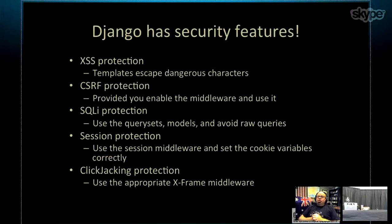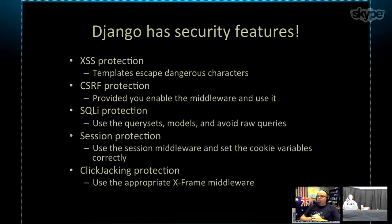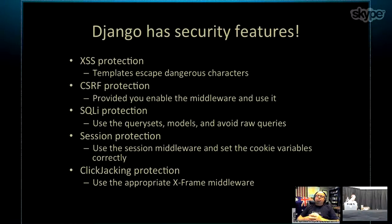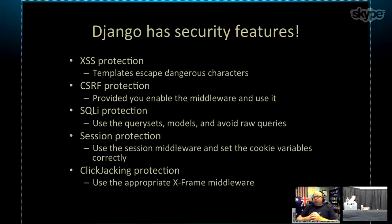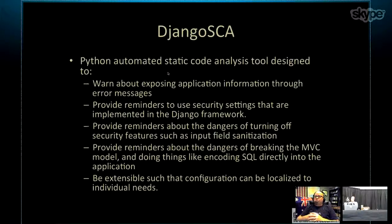Since this is about a Django static source code analysis project, we need to talk about Django's built-in security features. Cross-site scripting protection is provided by templates that escape dangerous characters. Cross-site request forgery protection is provided by enabling middleware. SQL injection protection comes from using a Python model instead of raw queries in the code. Session protection involves session middleware and correctly setting cookie variables, and clickjacking protection is available through the appropriate middleware within the Django framework.